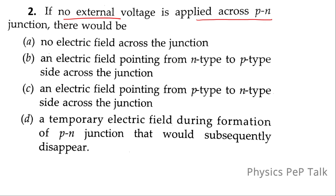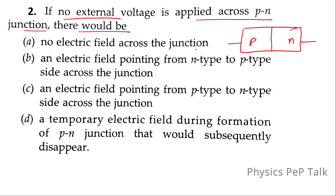Second question: if no external voltage is applied across a P-N junction, what would there be? This is P-side, this is N-side, and this is the potential barrier. When we have a P-N junction, there will be diffusion of electrons from N-side to P and diffusion of holes from P-side to N. This causes formation of immobile ions across the junction — positive immobile ions on the N-side and negative immobile ions on the P-side. Because of this, there will be an electric field from N-side to P-side. So option B, an electric field pointing from N-type to P-type side across the junction, is the correct answer.